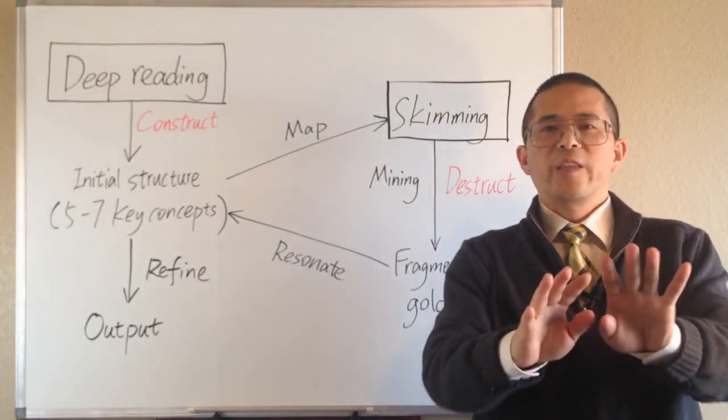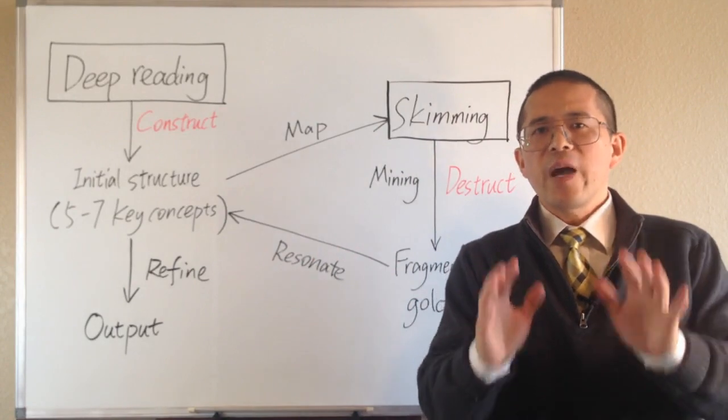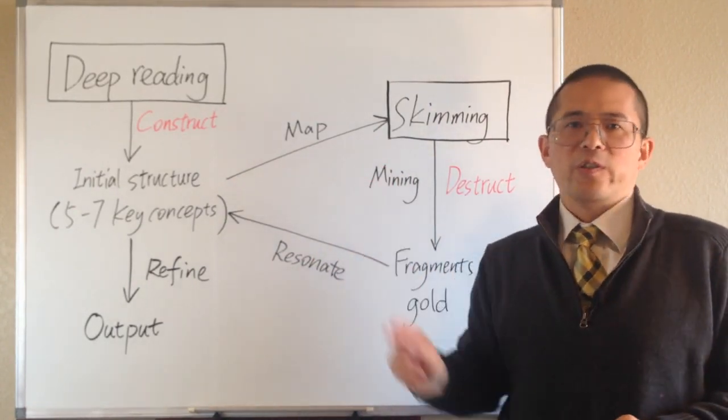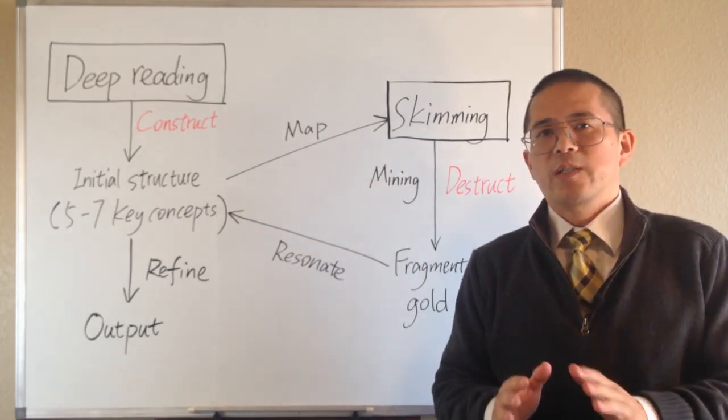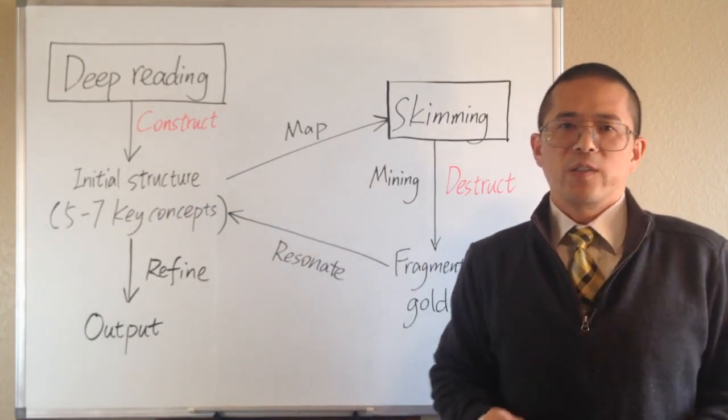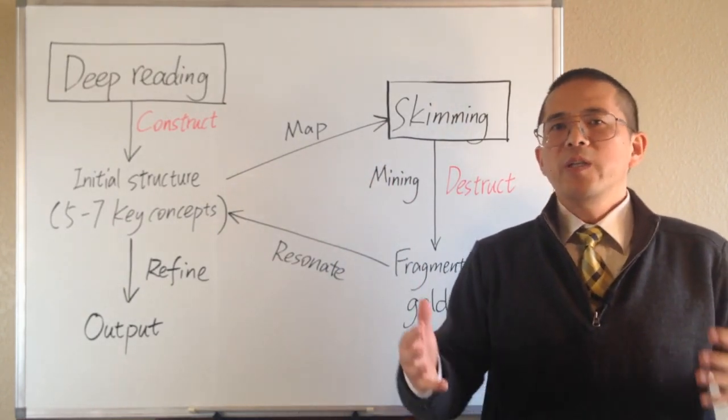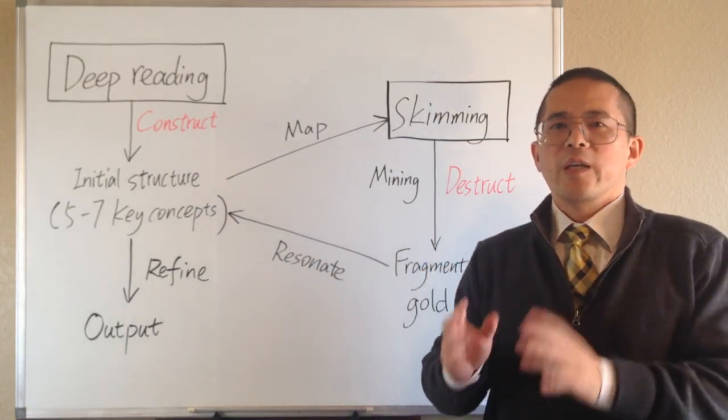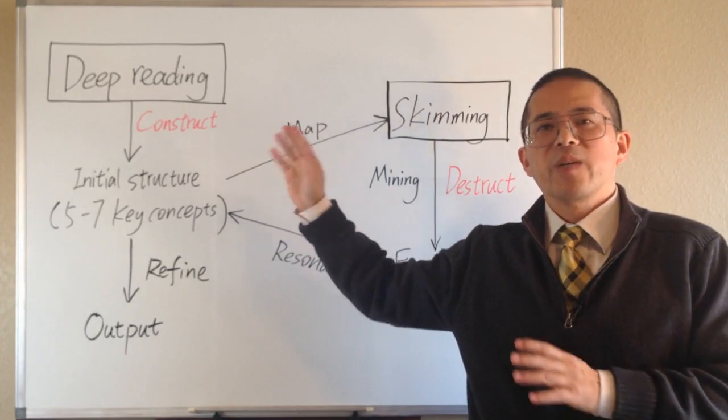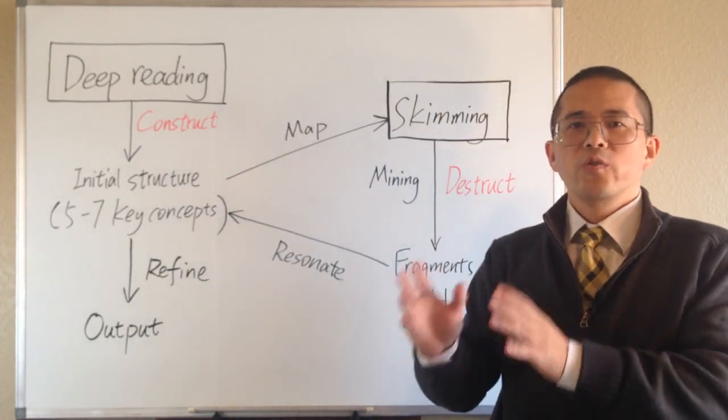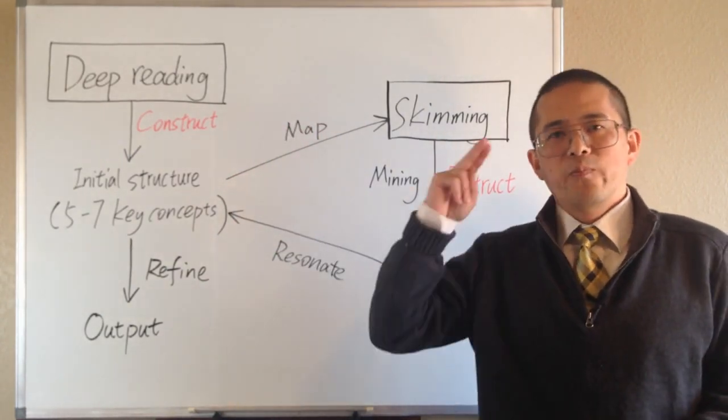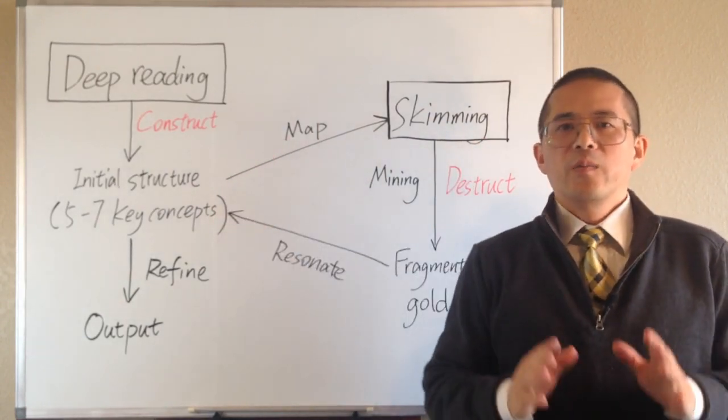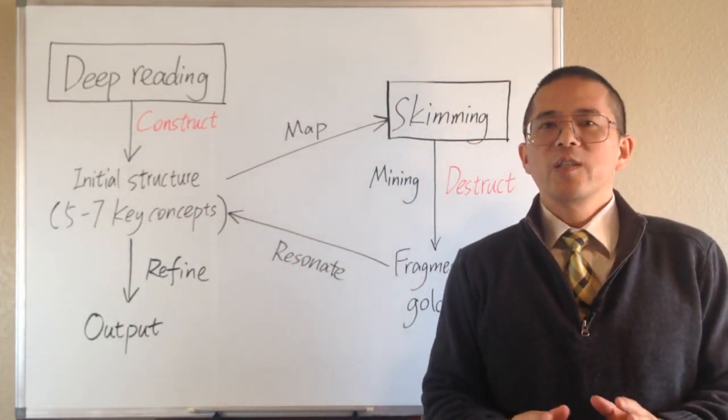Skimming for new knowledge in a sea of information is like mining for gold in a big mountain. To have a map first is extremely important to improve our efficiency. The map may come from our existing knowledge, but more often it comes from deep reading of some classic works on the chosen topic. A prepared brain or some deep reading are prerequisite for efficient skimming.